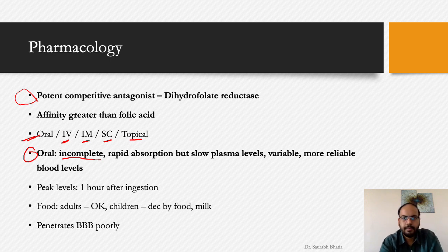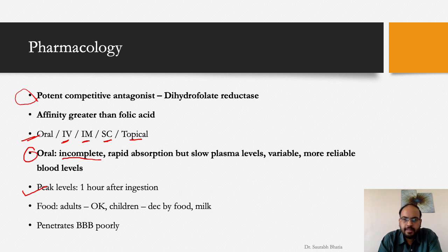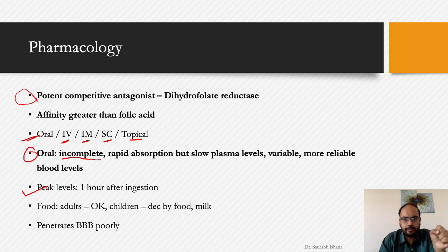Peak plasma levels are seen one hour after ingestion. In pediatric populations, absorption is decreased by food and milk, so it should be administered two to three hours away from feeding times or meals. In adults, there are no changes in absorption with food. Methotrexate penetrates the blood-brain barrier very poorly.